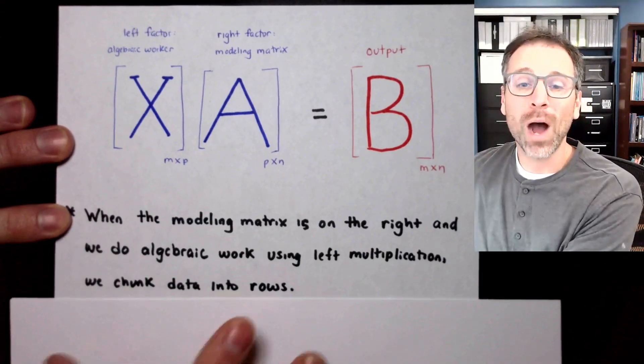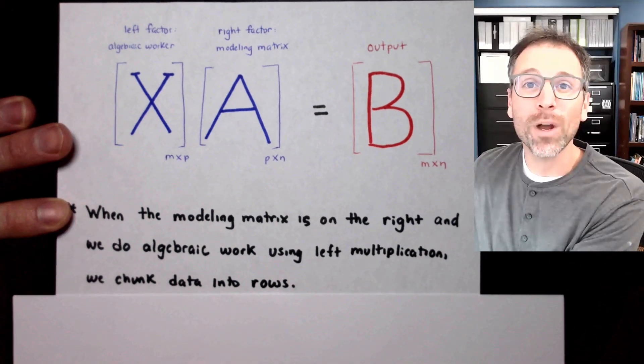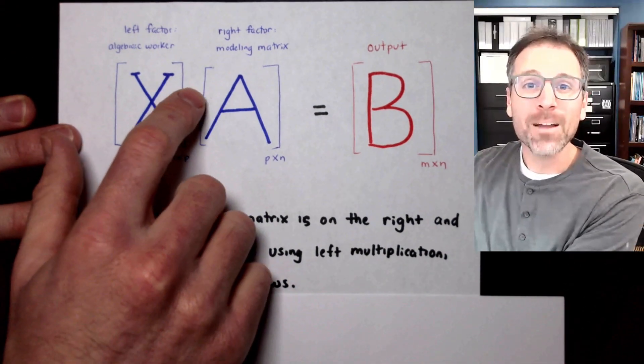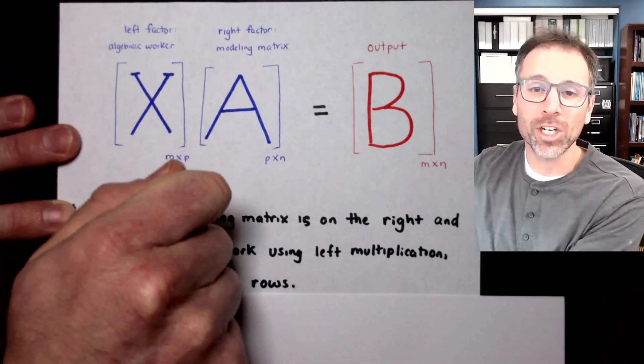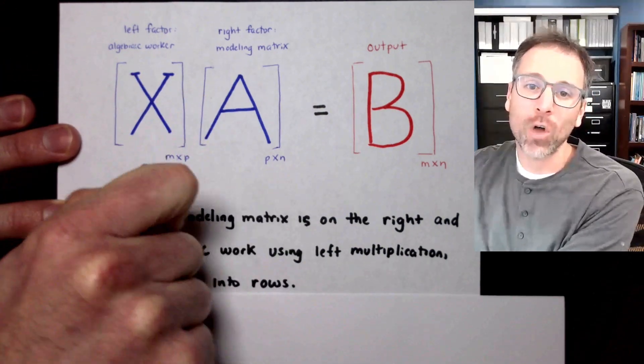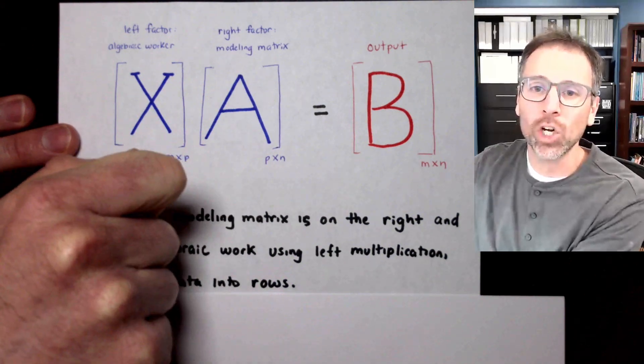Before we dive into this example, I want to go back to the intuition that I want to help you develop. Remember, in the anatomy of matrix-matrix multiplication, we're going to be thinking about left multiplication. So we take the hammer called X and we hit A on the left, thunk, thunk, thunk.